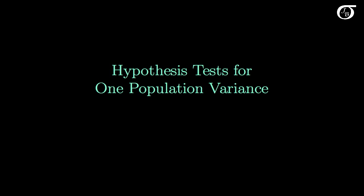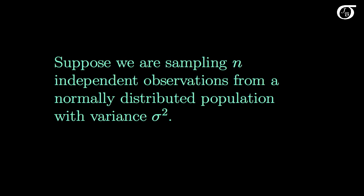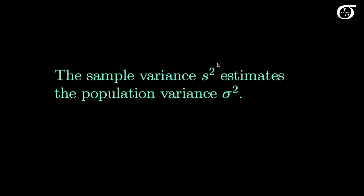Let's look into hypothesis tests for one population variance. We're going to be testing the null hypothesis that the population variance sigma squared is equal to some hypothesized value sigma-naught squared. Suppose we are sampling n independent observations from a normally distributed population with variance sigma squared. Our sample variance S squared estimates the population variance sigma squared, and we may wish to conduct hypothesis tests to investigate the true value of sigma squared.